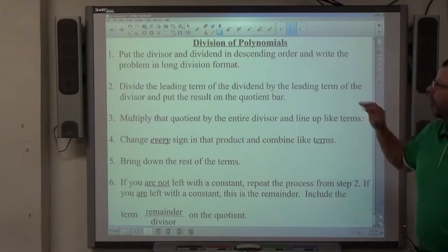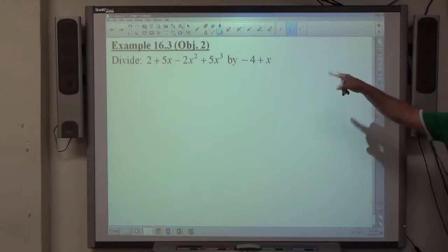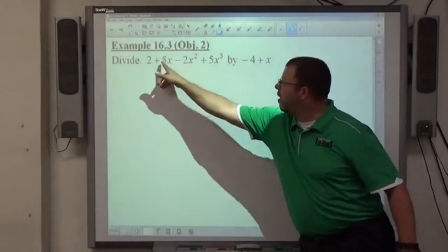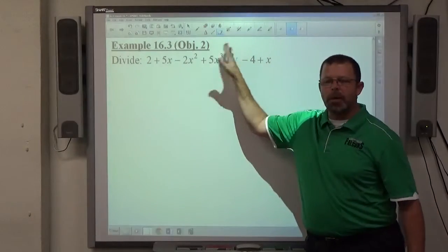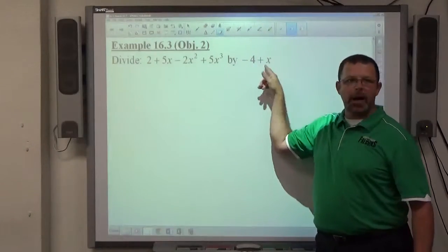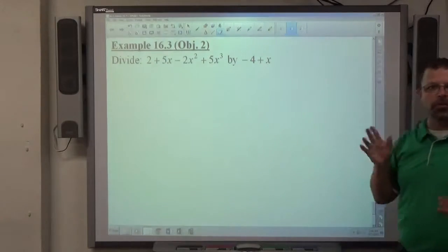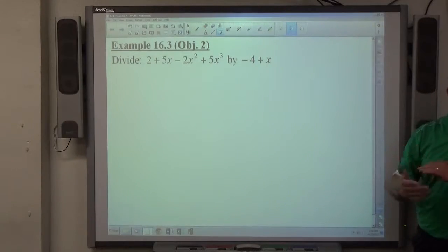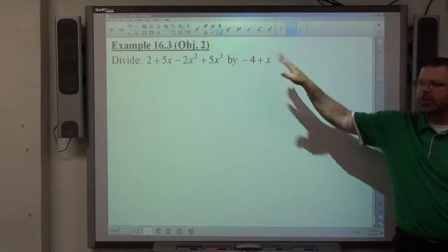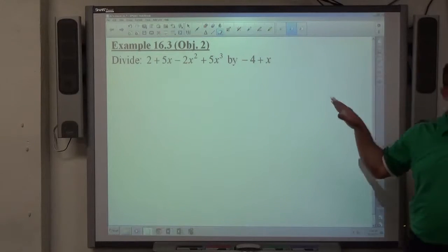Alright, so example 3 and 4, both of them are division of polynomials. You're dividing a polynomial, probably second, third, fourth power polynomial, by a binomial, probably a first power of x right now. Down the road we're going to maybe get to ones that have a higher power of x, but for now it'll probably be a binomial.